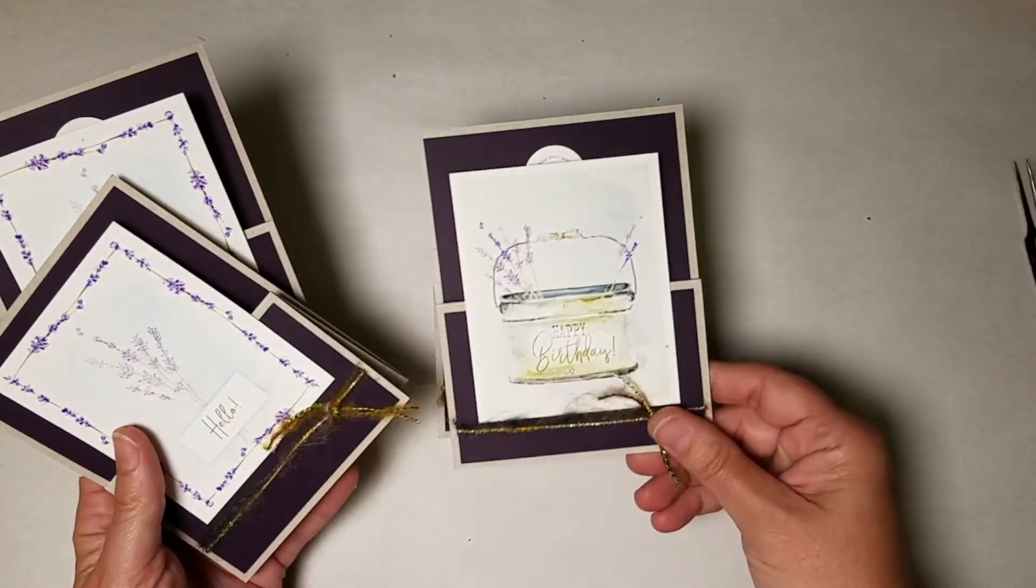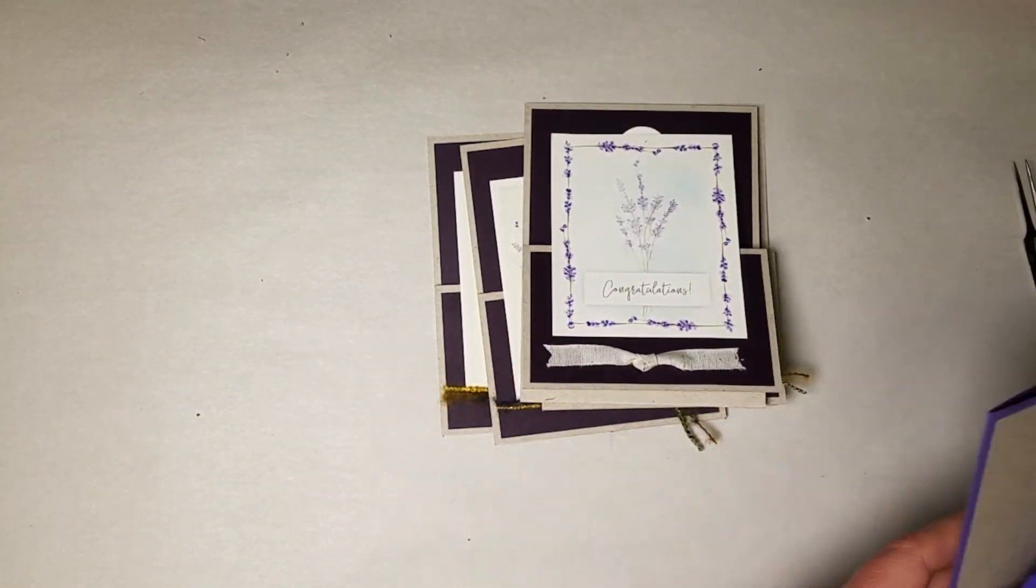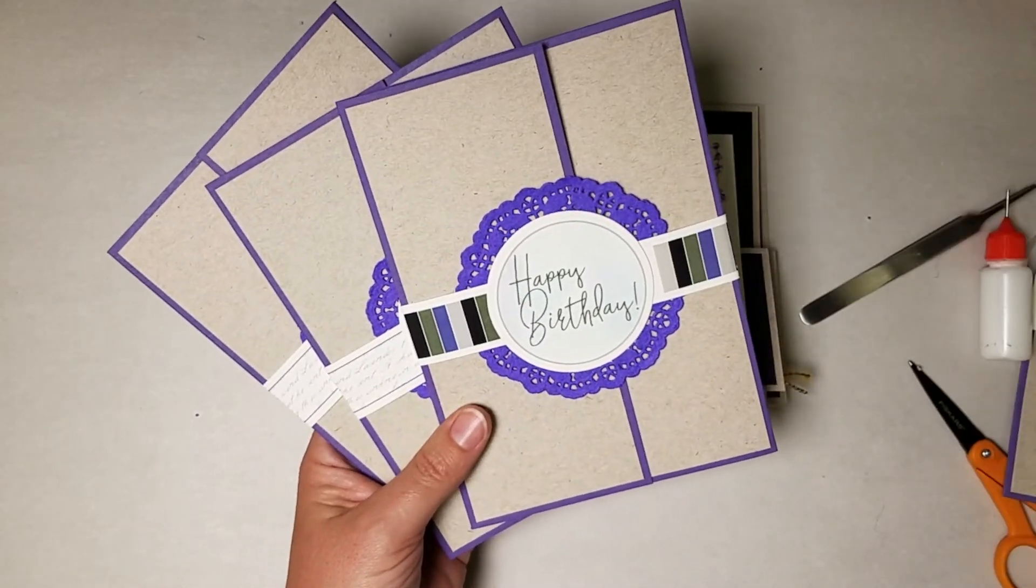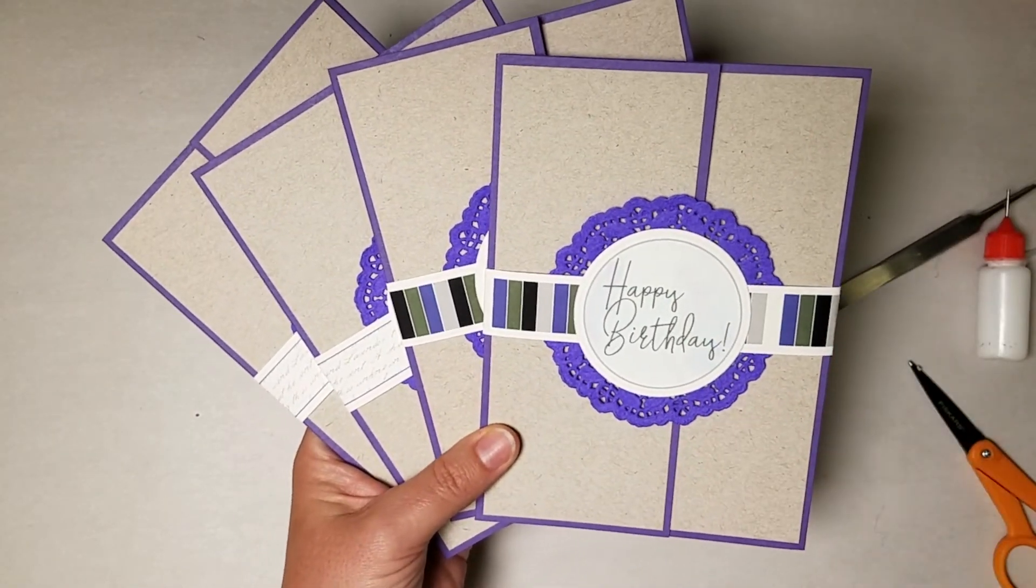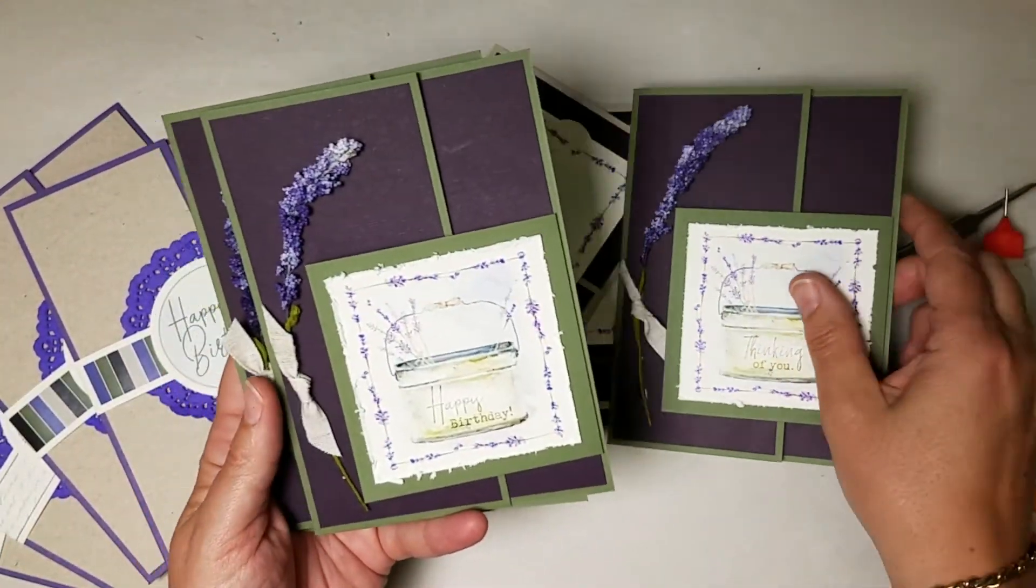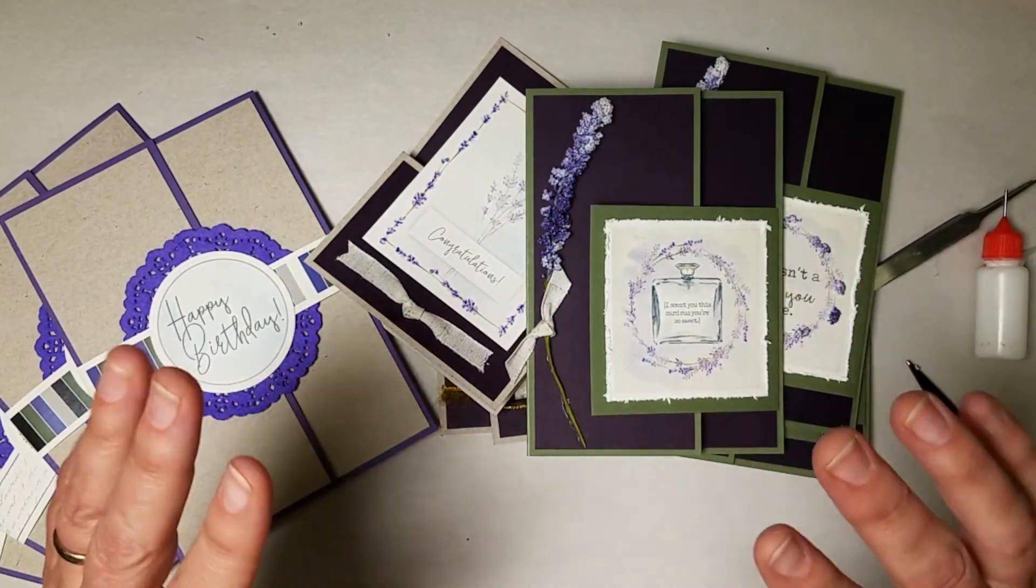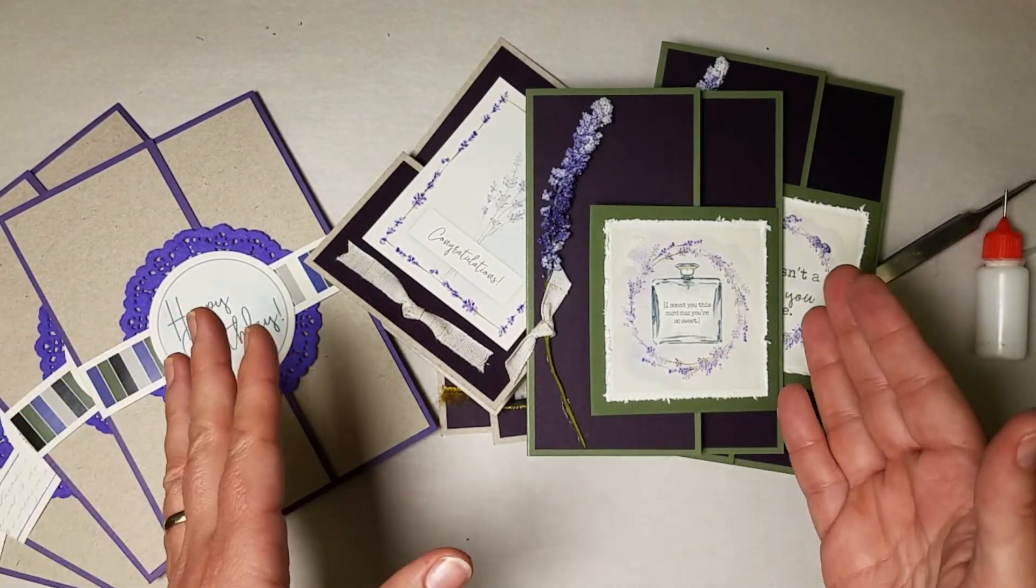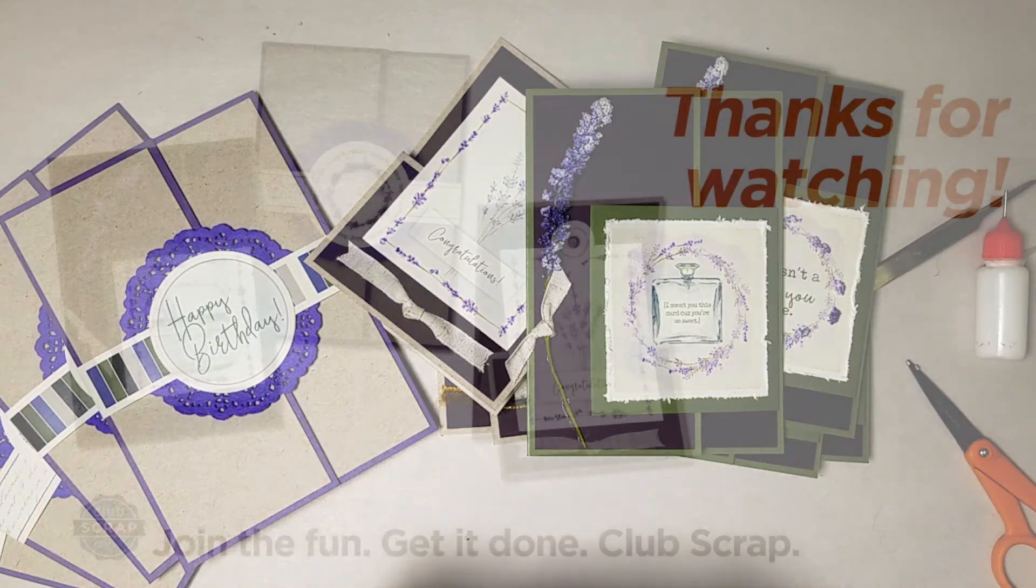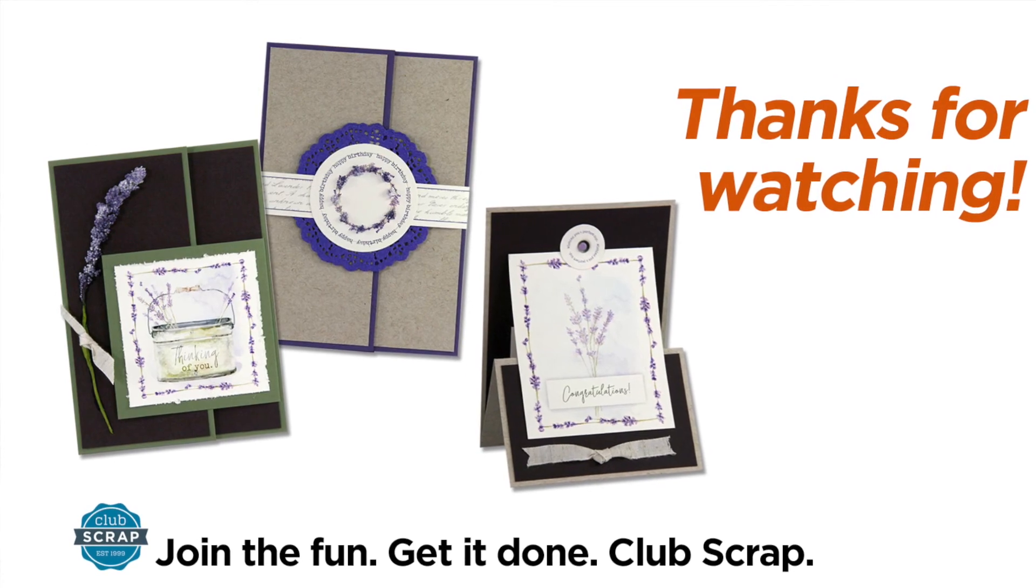So with this set, you've made four gorgeous stand-up tent cards, four beautifully adorned 5x7 gatefold cards, and then these really sweetly embellished A6 cards, and all of that for $16.95. If you've been to a card store lately and looked at the prices, there is no better value than the Club Scrap card kit. If you haven't already, I hope you give this membership a try, and I'll see you next time.